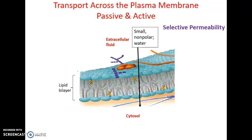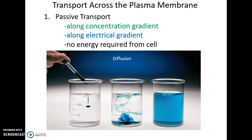Selective permeability allows some things to pass through, mainly small nonpolar molecules and water. This can occur by passive transport, where things move along the concentration gradient from high to low concentration, or along the electrical gradient. The best thing about passive transport is that no energy is required from the cell.